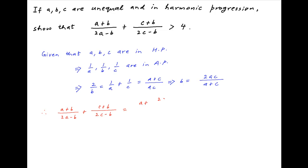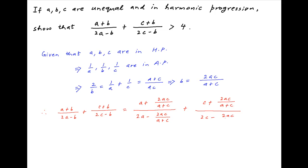Substituting the value of b obtained above, we get [a + 2ac/(a+c)] / [2a − 2ac/(a+c)] plus [c + 2ac/(a+c)] / [2c − 2ac/(a+c)].